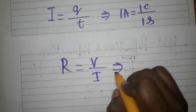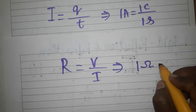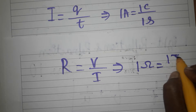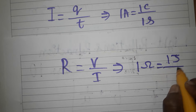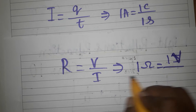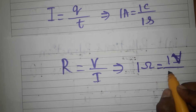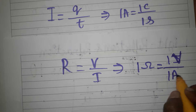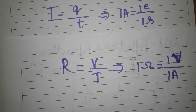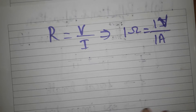The unit of resistance is ohms, unit of voltage is volts, unit of current is ampere. One ohm is equal to one volt divided by one ampere.